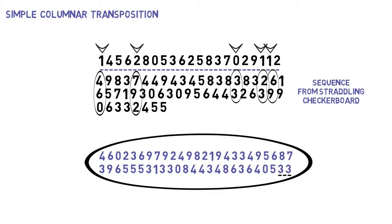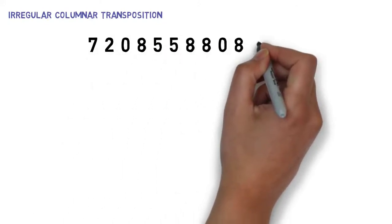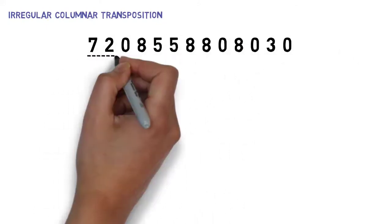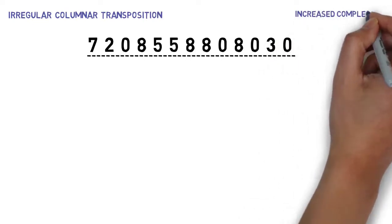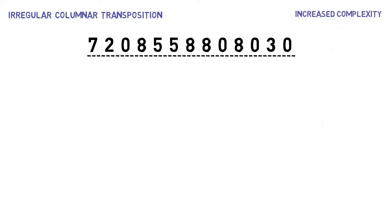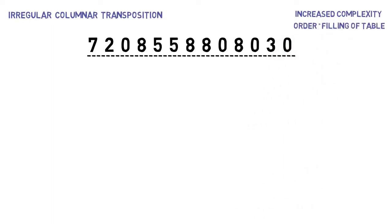We are going to use this sequence in our second and final transposition, which is an irregular columnar transposition. The key, as mentioned before, is the last 13 digits of our initial sequence. Although this transposition is also a columnar transposition, it includes an extra layer of complexity, so it is necessary for us to lay out the structure of the table before proceeding. The key is not only going to indicate the order with which we read out the columns, but also how we're going to fill out these numbers in the table.